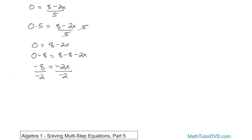And so the negative 2s cancel, that's why we're doing it, and on the left-hand side, what is negative 8 divided by negative 2? 8 divided by 2 is 4, negative divided by negative is positive, so it's positive 4 equals x, so x is equal to 4, and that's the correct answer.